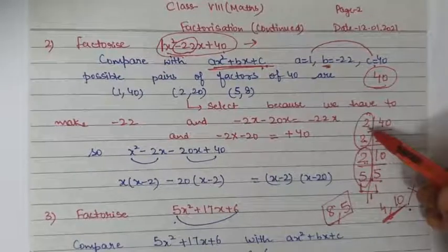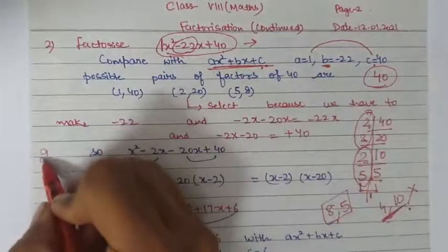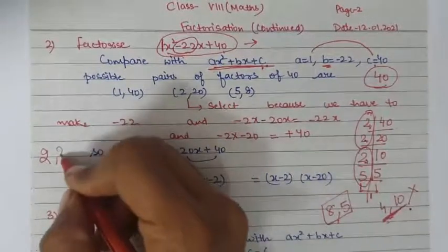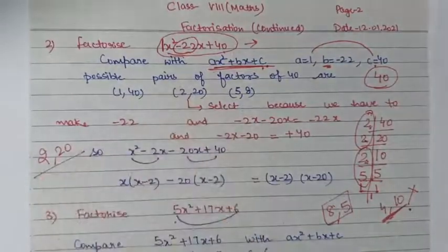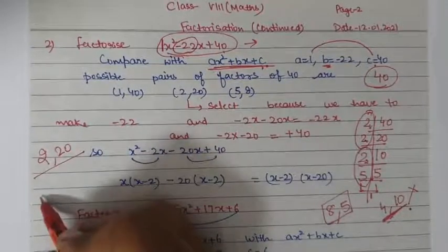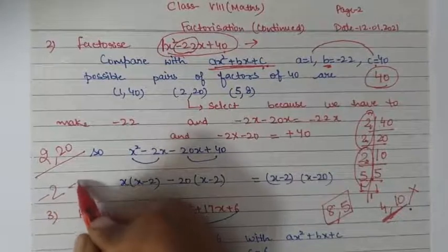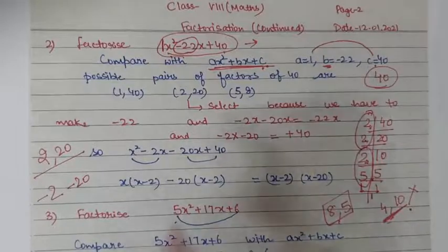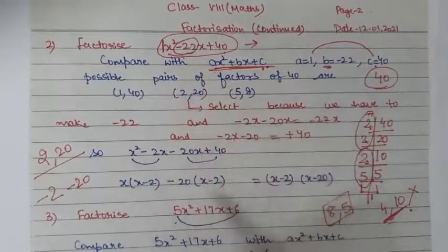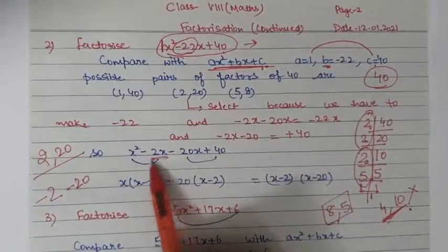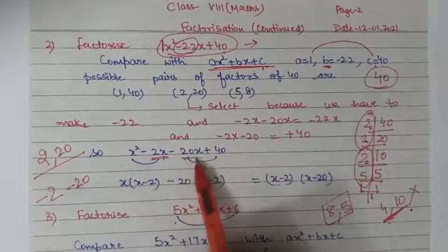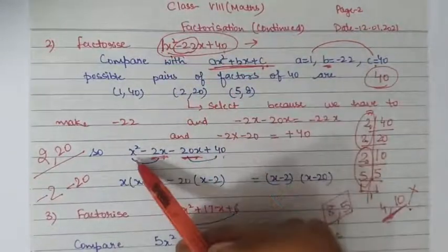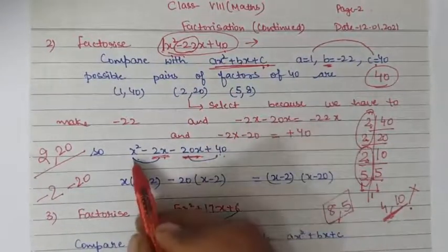Next, try 2 × 2 = 4, then 4 × 5 = 20 — giving the pair (2, 20). Yes, they work: minus 2 plus minus 20 gives minus 22. So in place of minus 22x, we write minus 2x minus 20x, with the other two terms remaining the same.